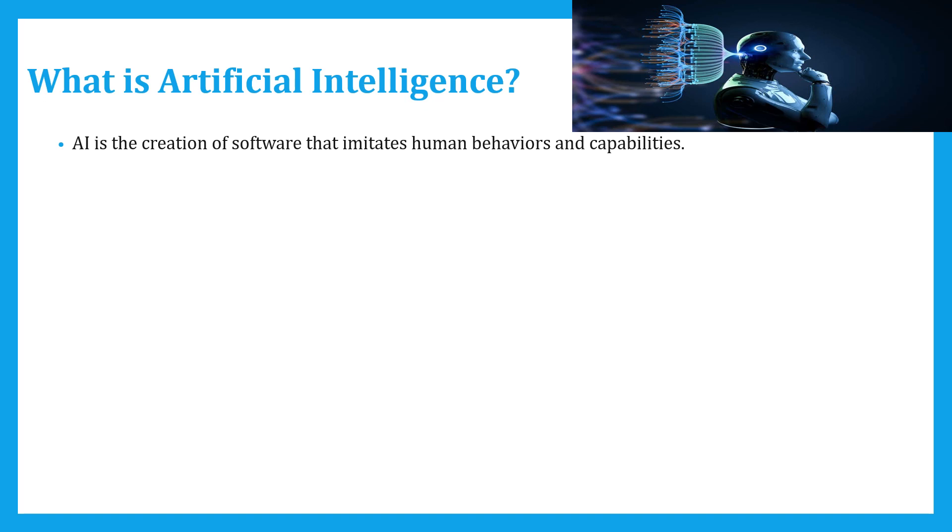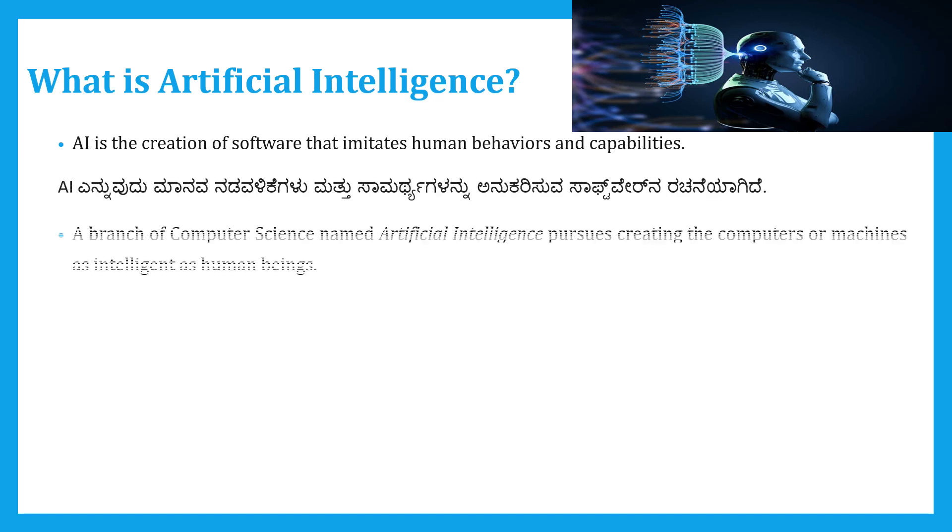Another definition: Artificial intelligence is a branch of computer science named artificial intelligence that pursues creating computers or machines as intelligent as human beings.